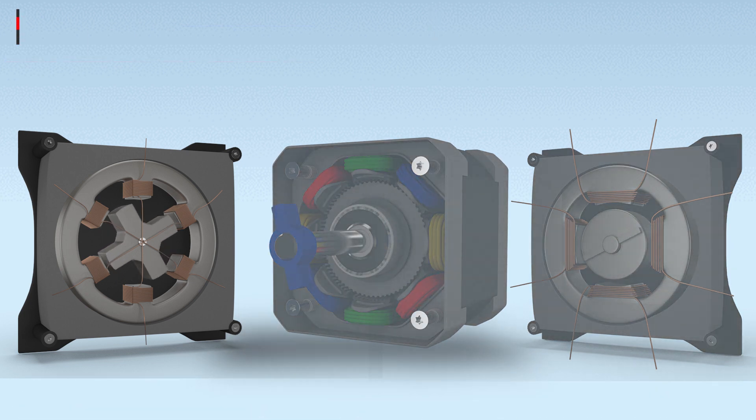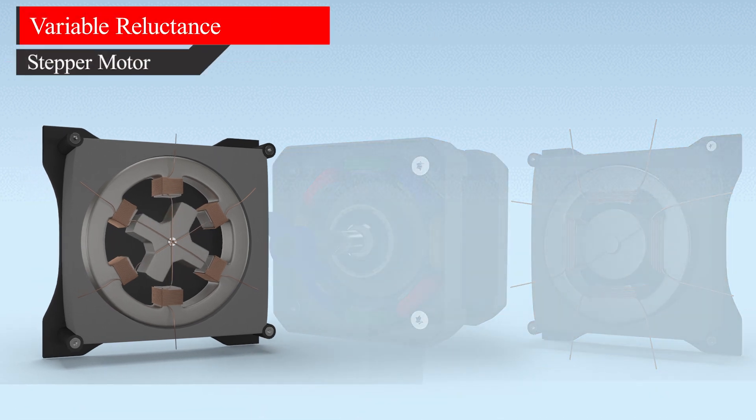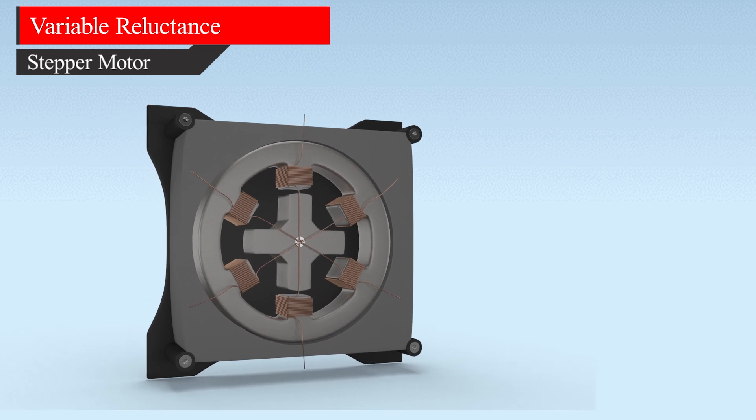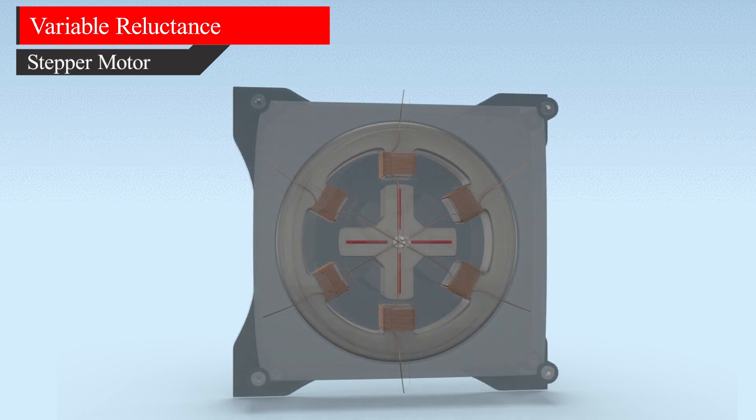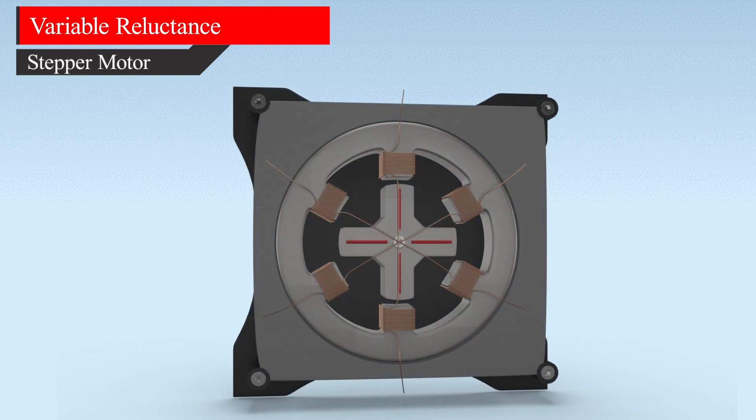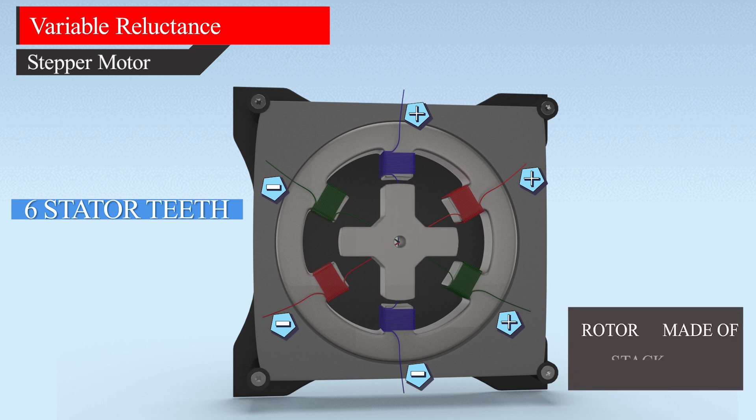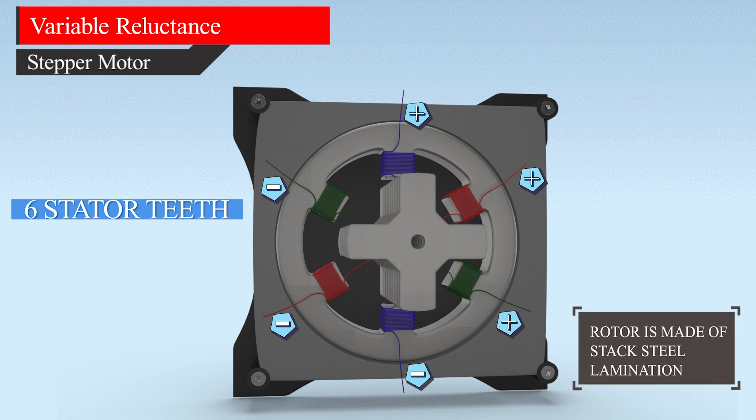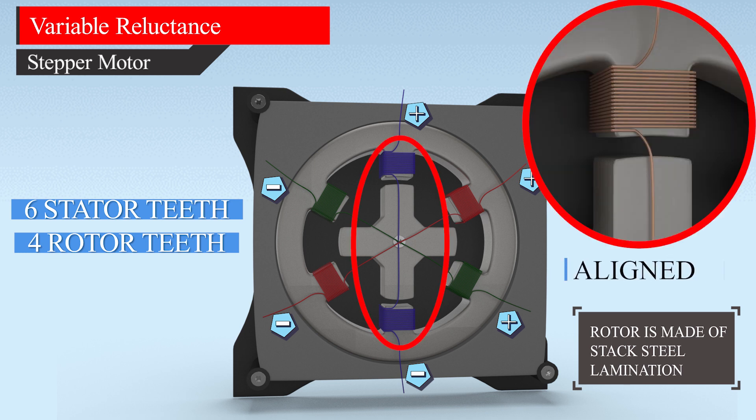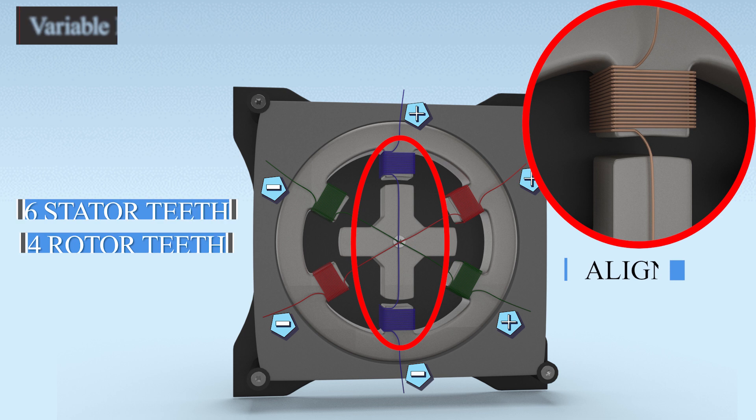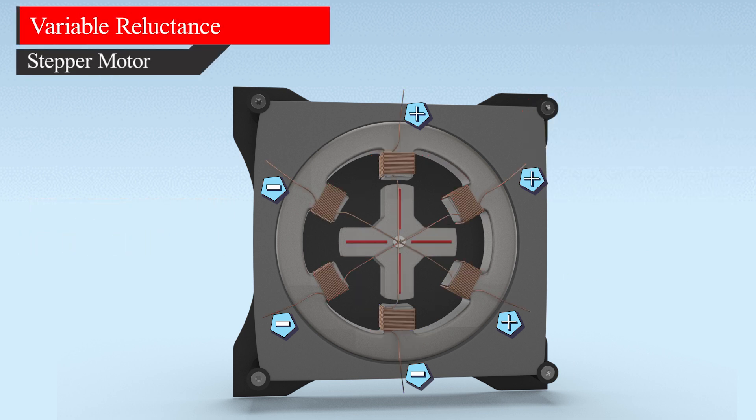First, we will try to understand how the variable reluctance type of stepper motor works, which is the simplest one. A variable reluctance stepper has six static teeth and can be energized with three separated DC sources. The rotor is made of a stack of steel laminations. The rotor has a different number of teeth than the stator, in this case four teeth. The arrangement ensures that only one pair of rotor teeth is aligned with the stator at a time.